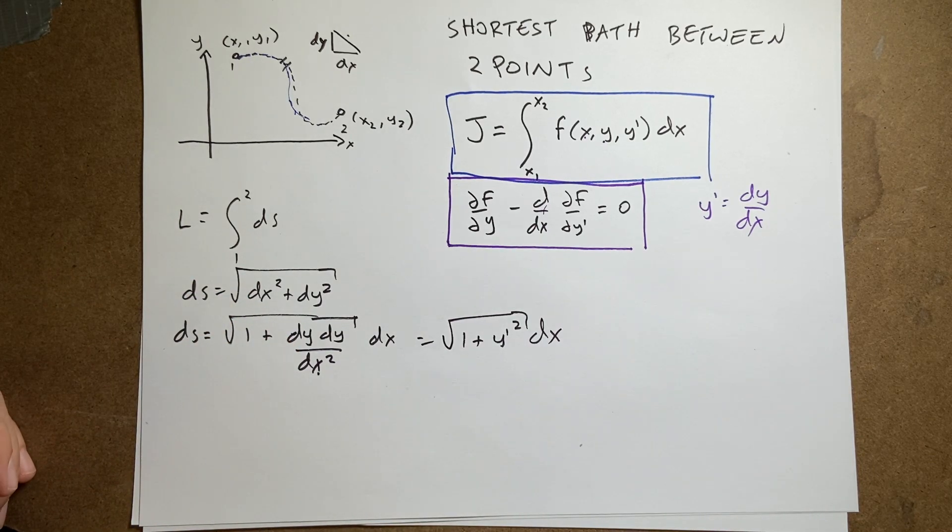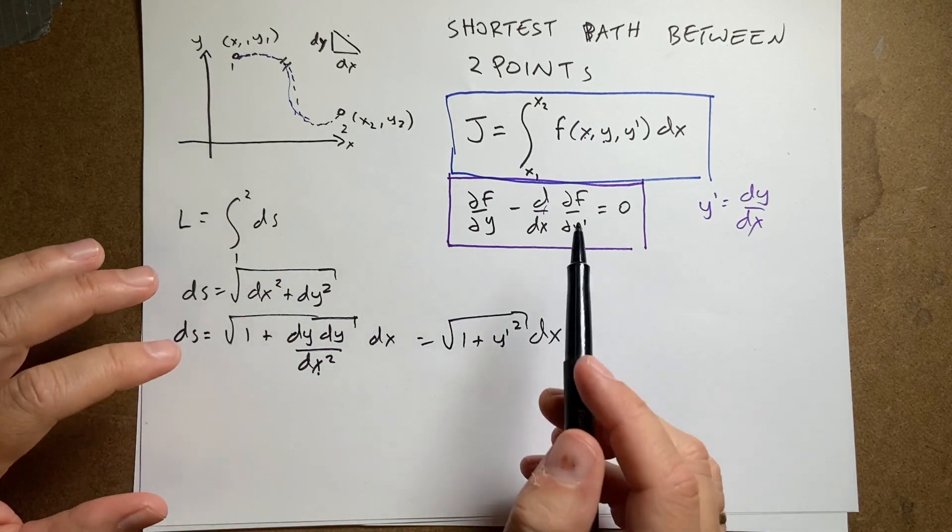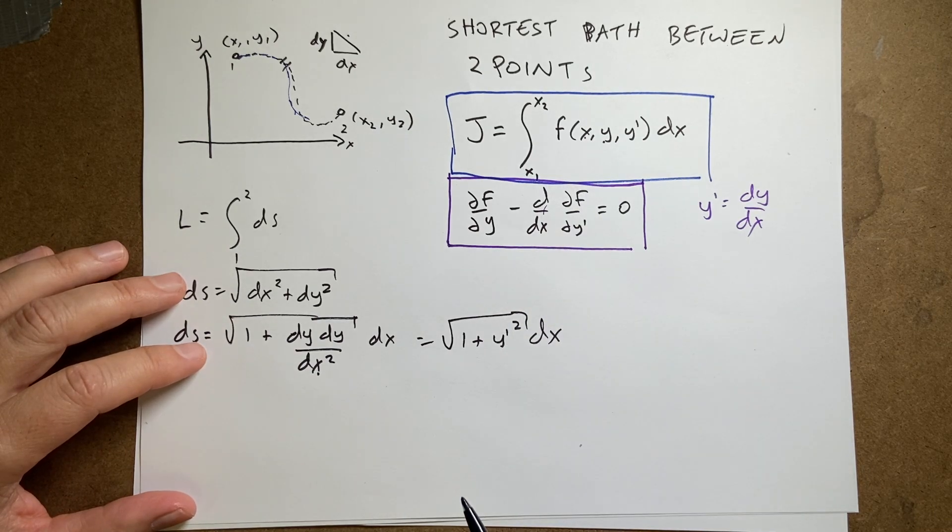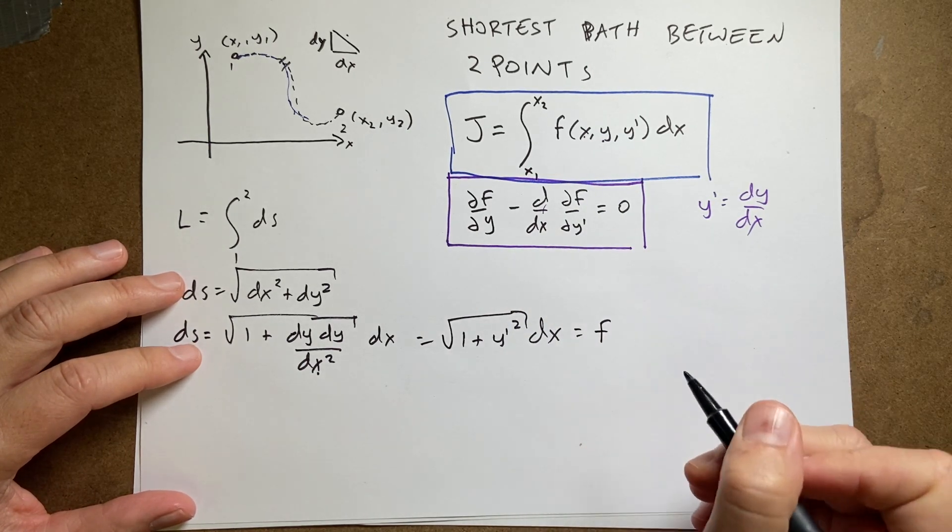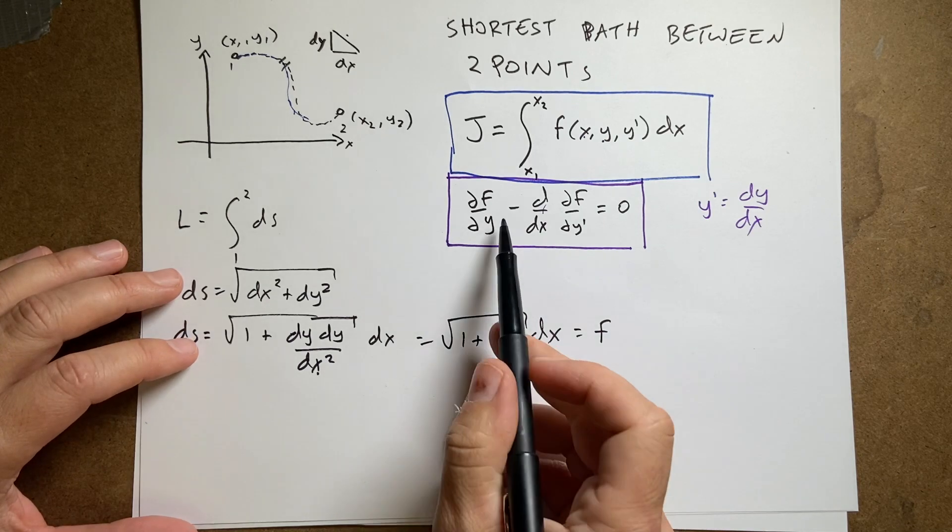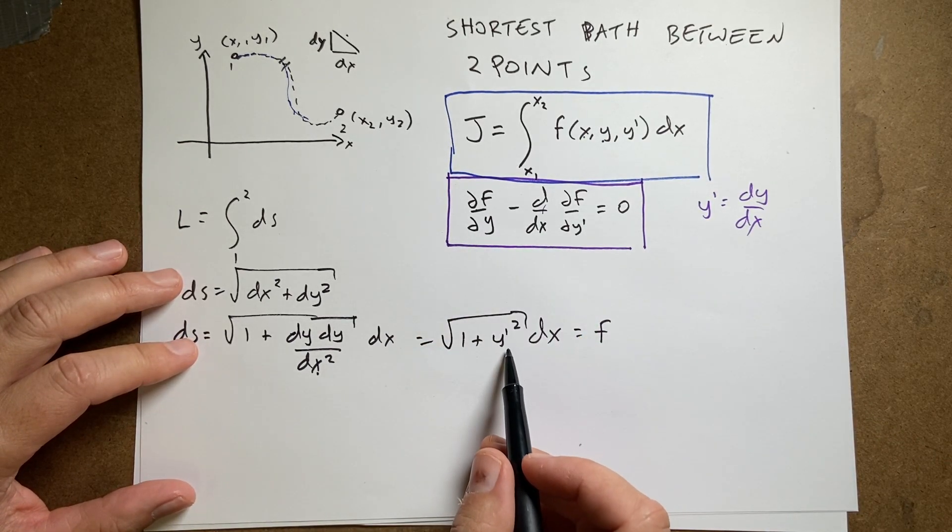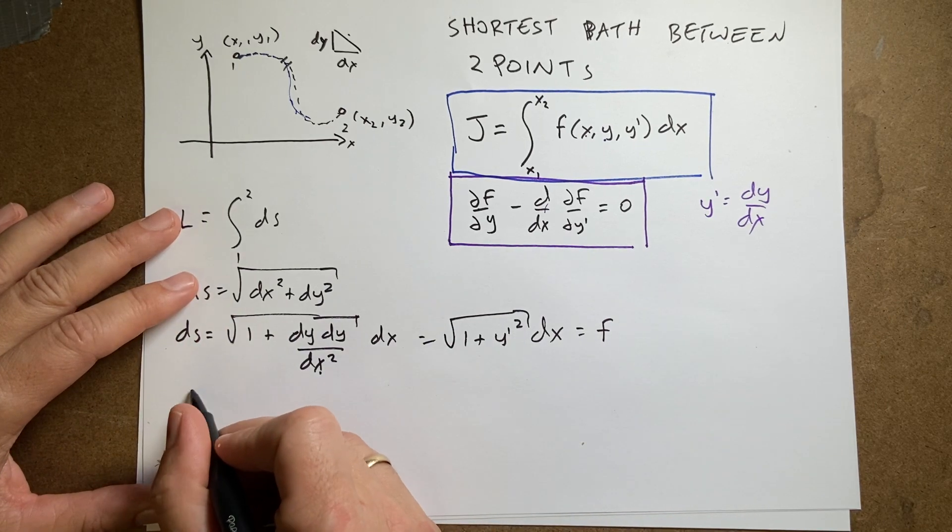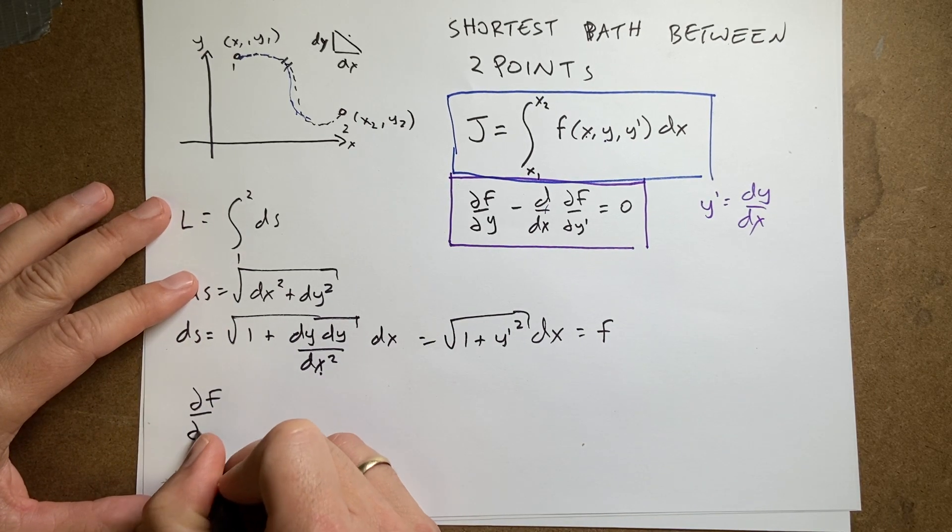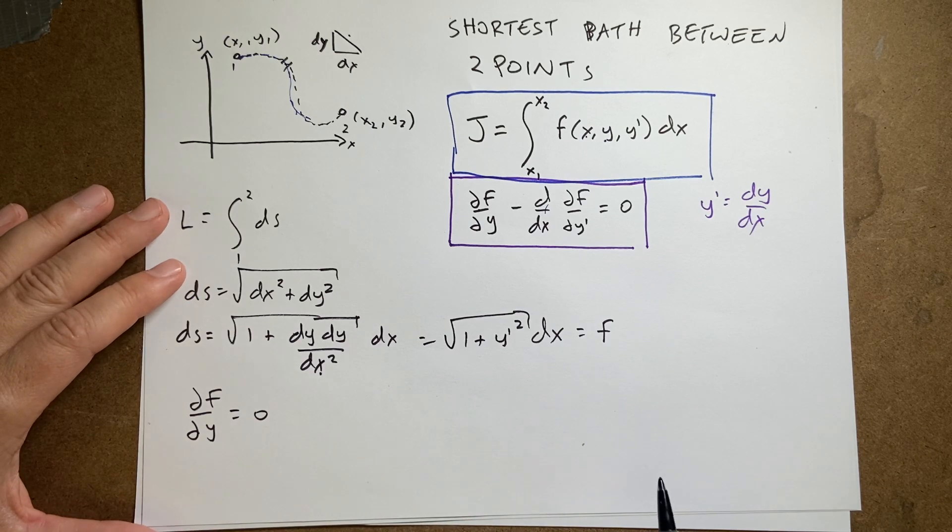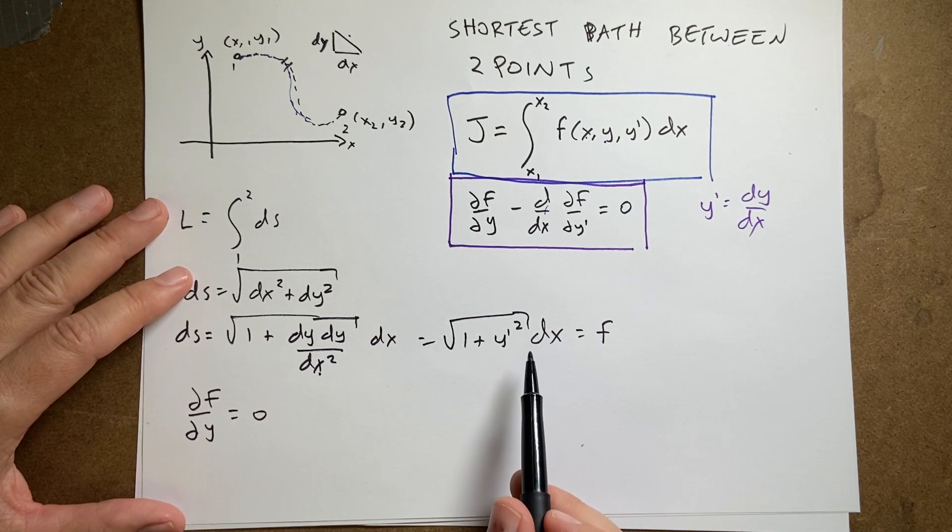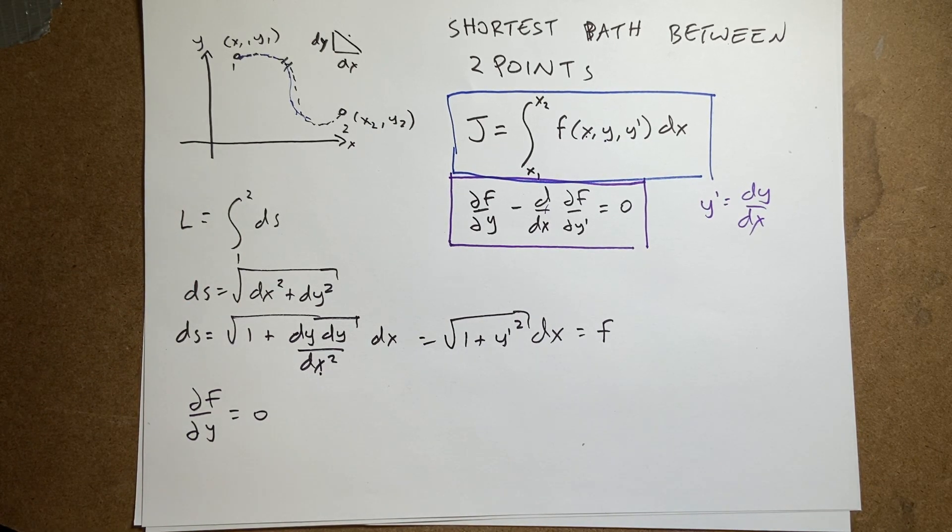Now, I don't have the dy in there, right? I don't have to worry about that. I have it in this form. So, that's my f. So, I can now do my partial derivative. So, the first thing I'm going to do is take the partial derivative of this with respect to y. That's pretty easy. The partial of f with respect to y is equal to 0. Why? Well, there's no y in there, right? And it's a partial derivative. That's easy.